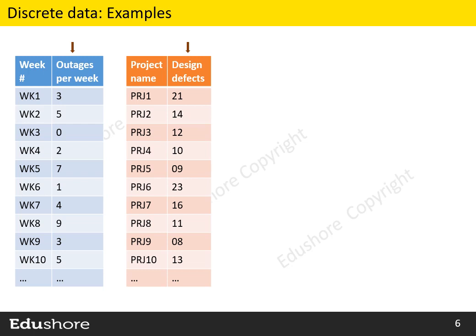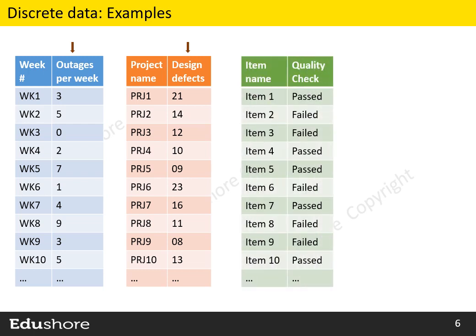Another example: we capture the data of quality checks, whether an item has passed or failed during the quality check. Since the data is based on decision or judgment, it is discrete data.